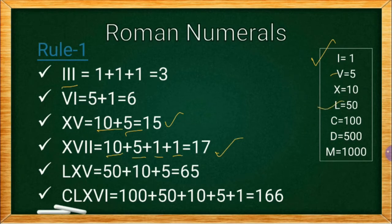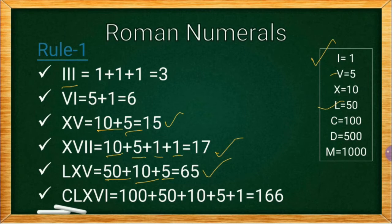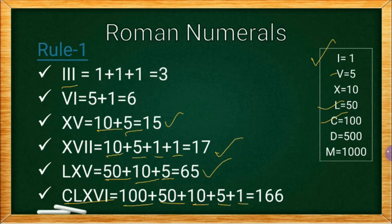LXV: L is 50, so LXV means 50 plus 10 plus 5, which is 65. For the next example, CLXVI: C means 100, L means 50, X is 10, V is 5, and I is 1. So 100 plus 50 is 150, plus 10 is 160, plus 5 is 165, plus 1 equals 166. Don't you think this is easy?